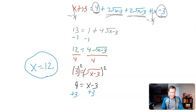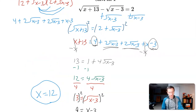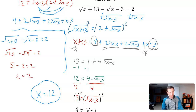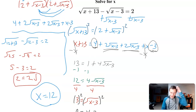It wouldn't be the worst idea to check, so let's verify. Plugging in x equals 12: square root of 12 plus 13, minus square root of 12 minus 3, equals 2. Square root of 25 minus square root of 9 equals 2. That's 5 minus 3 equals 2. 2 equals 2 — it checks out. x equals 12 is confirmed.